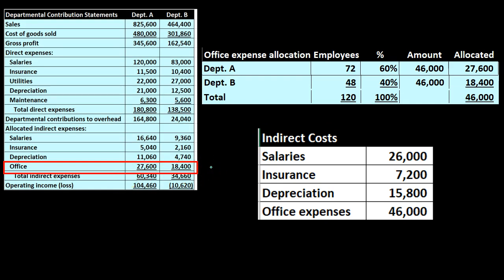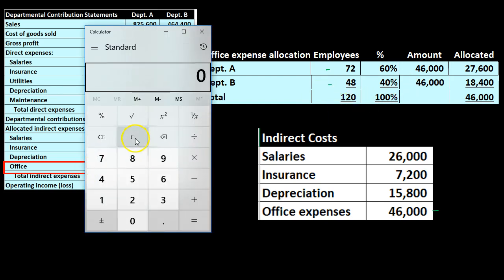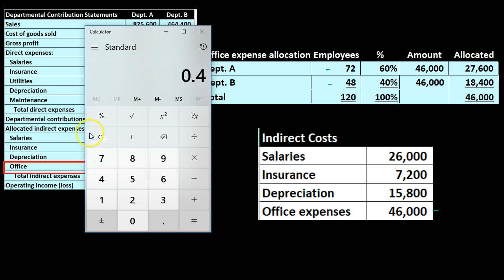For office expenses, we use the same concept but a different activity base. We decided sales is not the best choice and square footage is not most relevant here either. We think the number of employees is most relevant because office expenses are likely consumed by employees — the department with more employees probably uses more office expense. Department A has 72 employees, Department B has 48, totaling 120. The ratio is 72/120 equals 60% for A, and 48/120 equals 40% for B. We then apply this to $46,000 in office expenses: $46,000 times 0.60 equals $27,600 for A, and times 0.40 equals $18,400 for B.